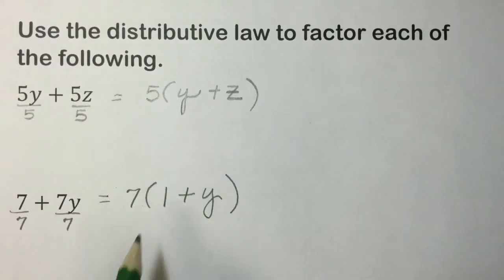And to check this, use the distributive from left to right, distribute that multiplication instead of the division, the factoring that we were just doing. And you see, 7 times 1 is 7, 7 times Y is 7Y, we result in that original expression that we had of 7 plus 7Y.